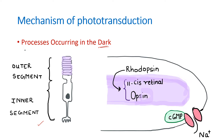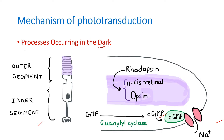The cGMP-gated sodium channel allows entry of sodium and it is gated by cGMP — only when cGMP is present will this channel be open. So in the dark, who is providing the cGMP? cGMP is converted from GTP by a special enzyme called guanylyl cyclase. This enzyme continuously converts GTP to cGMP, which opens the channel and allows continuous entry of sodium into the outer segment.